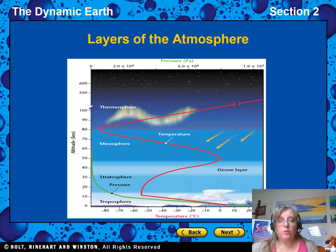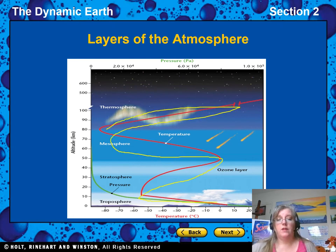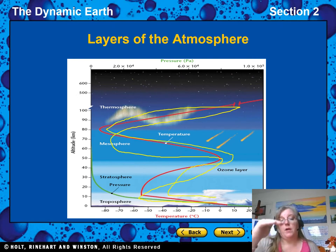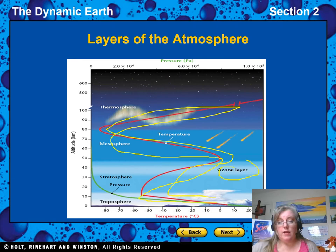As you go through the layers, this red line shows you the temperatures — the temperatures change, and that's one of the ways they mark the levels. You can also see the ozone layer, which is part of the stratosphere.